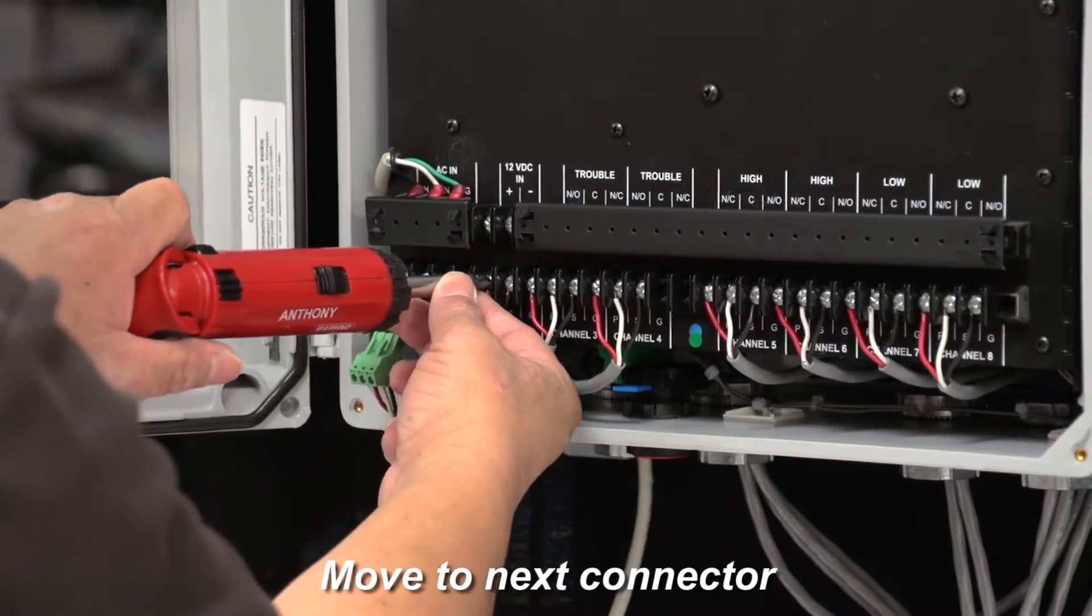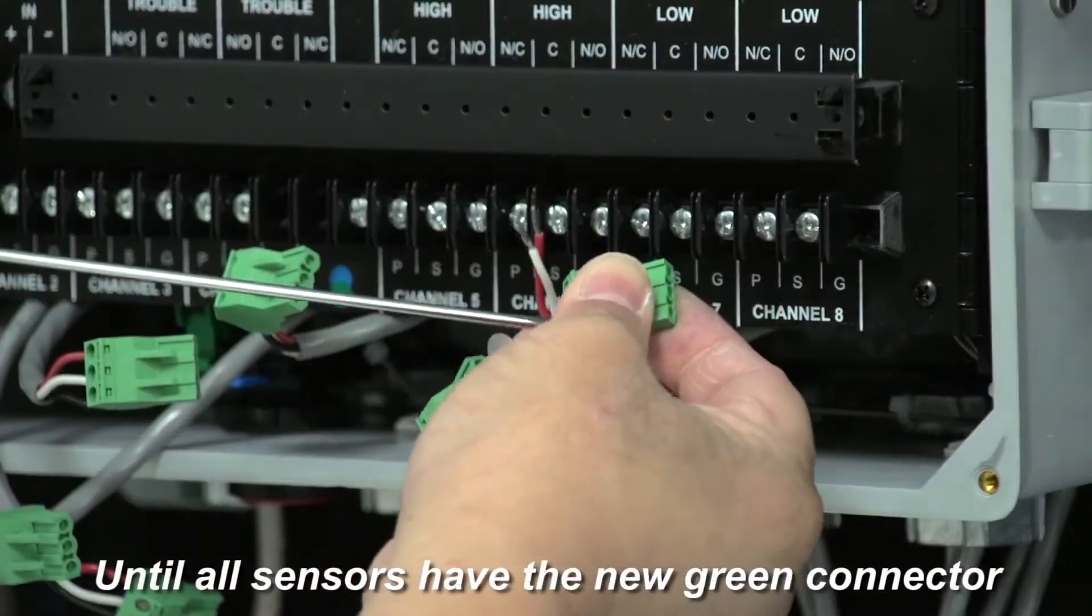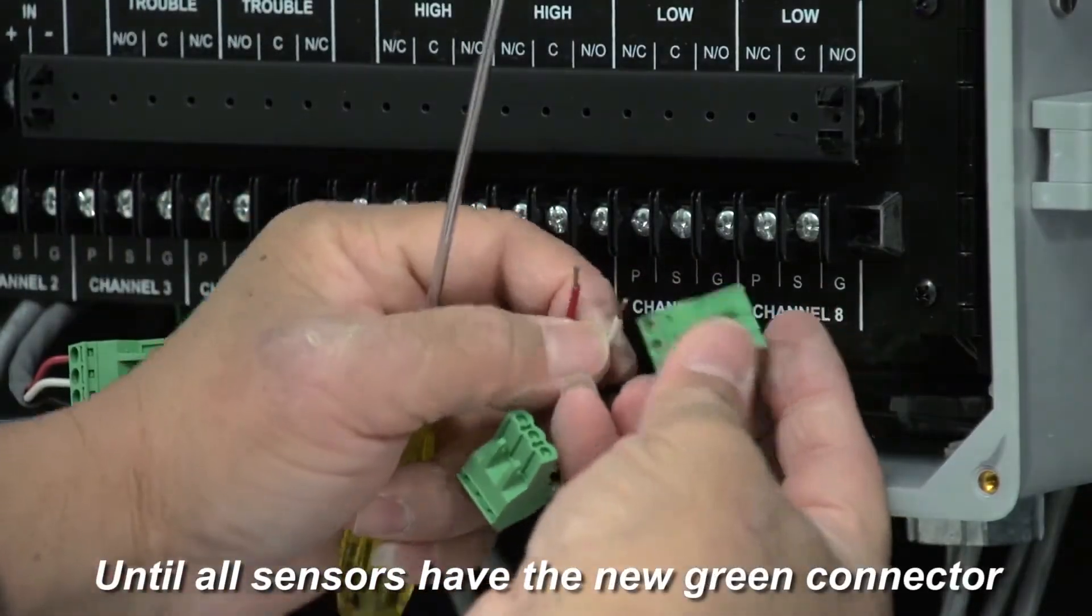Then, move on down the row and do the same for each of the eight sensors until all sensors now have a green connector.